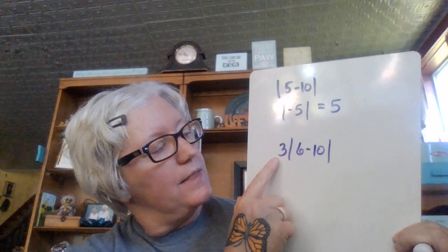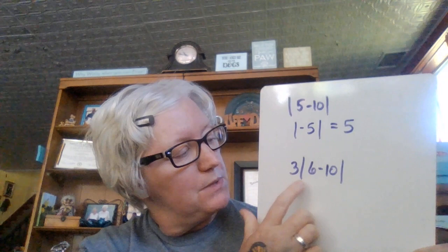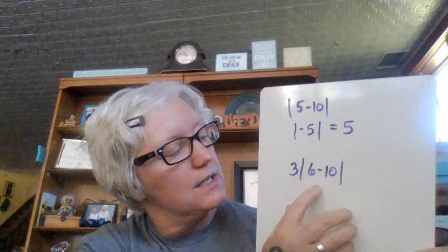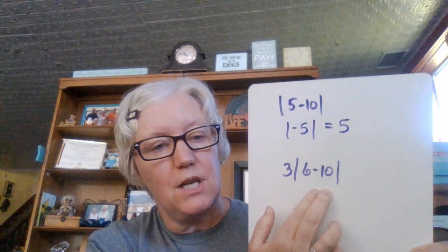Now if I did something like this, on the outside of any grouping symbol, whether it was parentheses when we were distributing or absolute value brackets, if you don't see a symbol, it's always multiply. So this is saying three times the absolute value of six minus 10. Again, we'll review the order of operations in a little bit, but a grouping symbol like parentheses, exponents, multiply, divide, add, subtract—the old PEMDAS from seventh grade—means you're going to go inside the brackets first and do six minus 10.